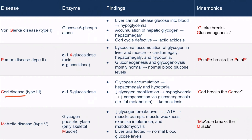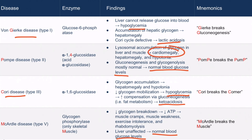As a summary, Cori disease and von Gierke disease are the two glycogen storage diseases that result in hypoglycemia. Von Gierke disease results in a lactic acidosis, and Cori disease results in a ketoacidosis. Pompe disease and McArdle disease both have normal blood glucose levels. Pompe disease affects the heart, and McArdle disease only affects skeletal muscle tissue.